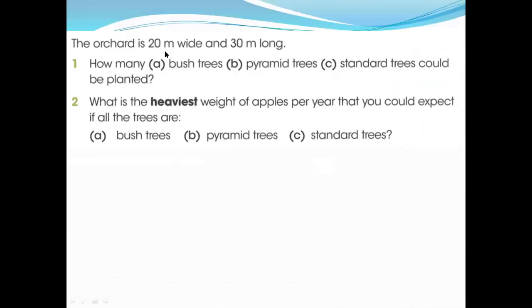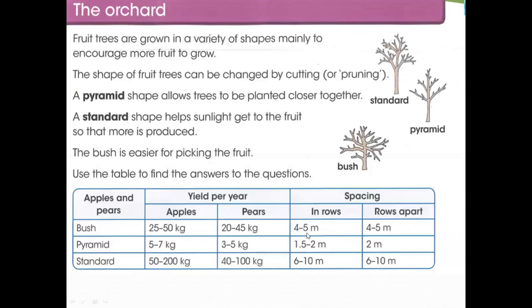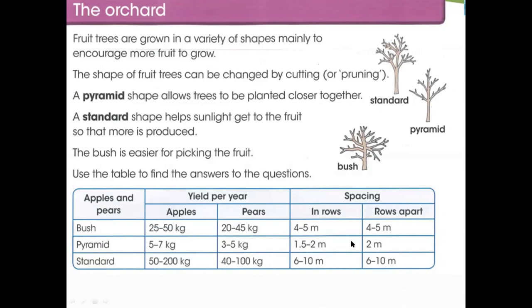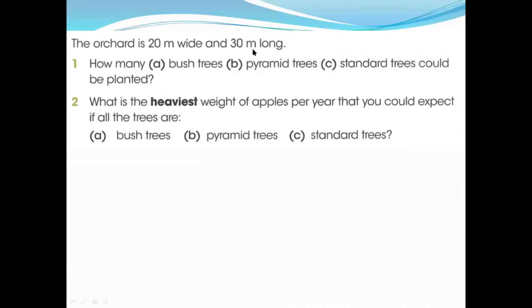In this table, bush trees: apple 25 to 50 kg per year and pears 20 to 45 kg. Like this on pyramid shape trees, on standard shape trees, and in meters row apart - how much distance between two trees: 4 to 5 meter, 1.5 to 2, or 6 to 10. The question is, the orchard is 20 meter width and 30 meter long. How many bush trees can you plant? In the field which is 20 divided by 5. If you divide by 5, 4 coming. And like this 30 divided by 5, 6 coming. 6 multiply 4, 24. From where we get this 5? From here you can see, 5 centimeters. So you need to divide both with 5. 20 divided by 5, 30 divided by 5. So 20 divided by 5, 4 coming and 30 divided by 5, 6 coming. 6 multiply 4, 24.